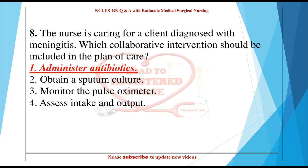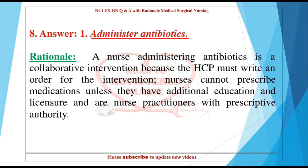Question 8: The nurse is caring for a client diagnosed with meningitis. Which collaborative intervention should be included in the plan of care? 1. Administer antibiotics. 2. Obtain a sputum culture. 3. Monitor the pulse oximeter. 4. Assess intake and output. Answer: 1. Administer antibiotics. Rationale: A nurse administering antibiotics is a collaborative intervention because the HCP must write an order. Nurses cannot prescribe medications unless they have additional education and licensure as nurse practitioners with prescriptive authority.